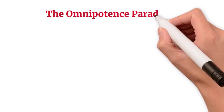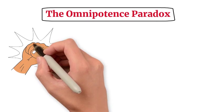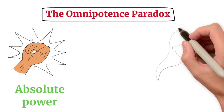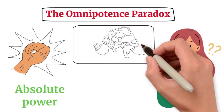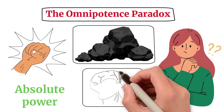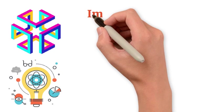The Omnipotence Paradox strikes at the heart of the concept of absolute power. It poses a simple yet insightful question: Can an all-powerful being create a stone so heavy that it cannot lift it? This paradox challenges the coherence of the notion of omnipotence itself.